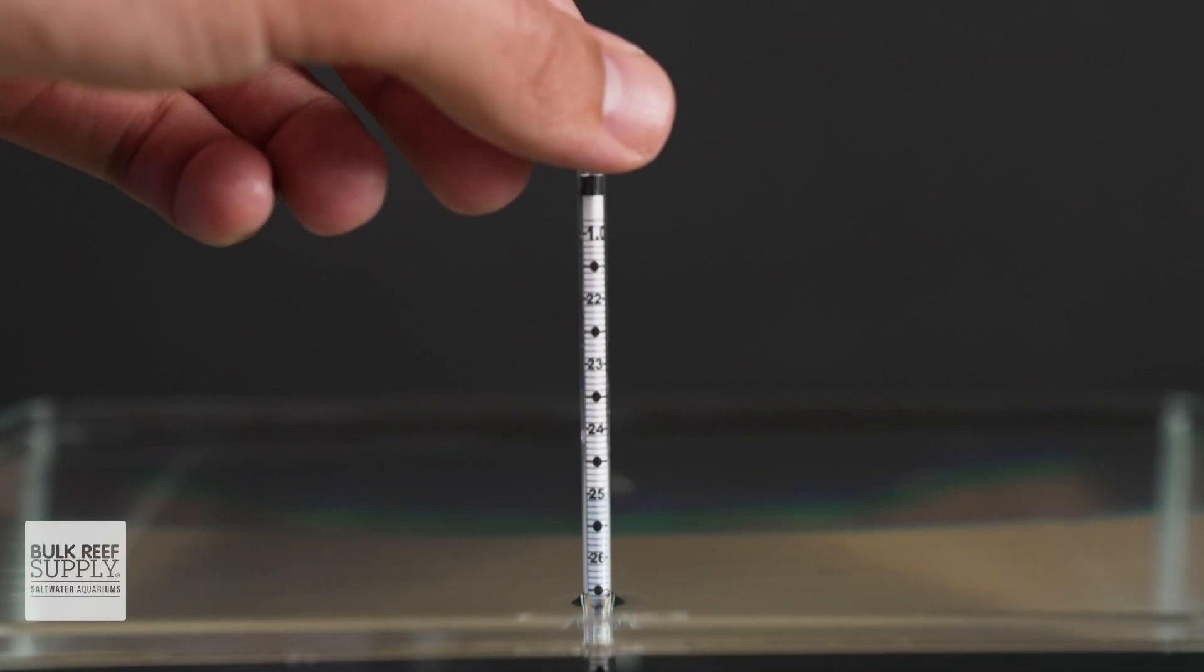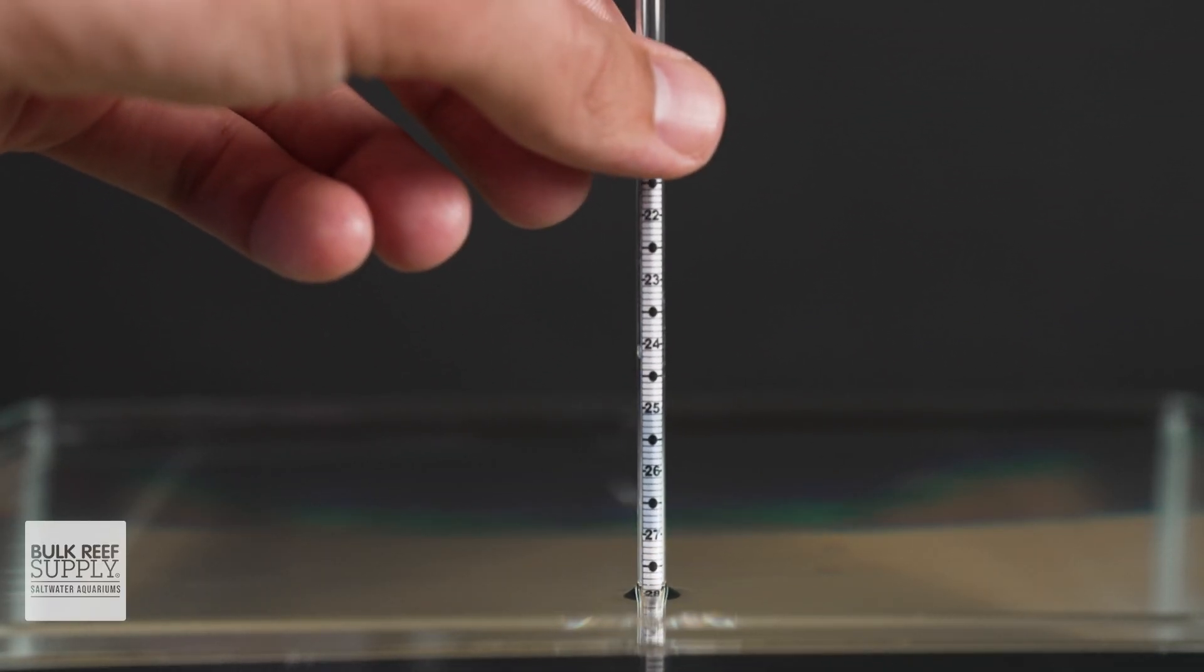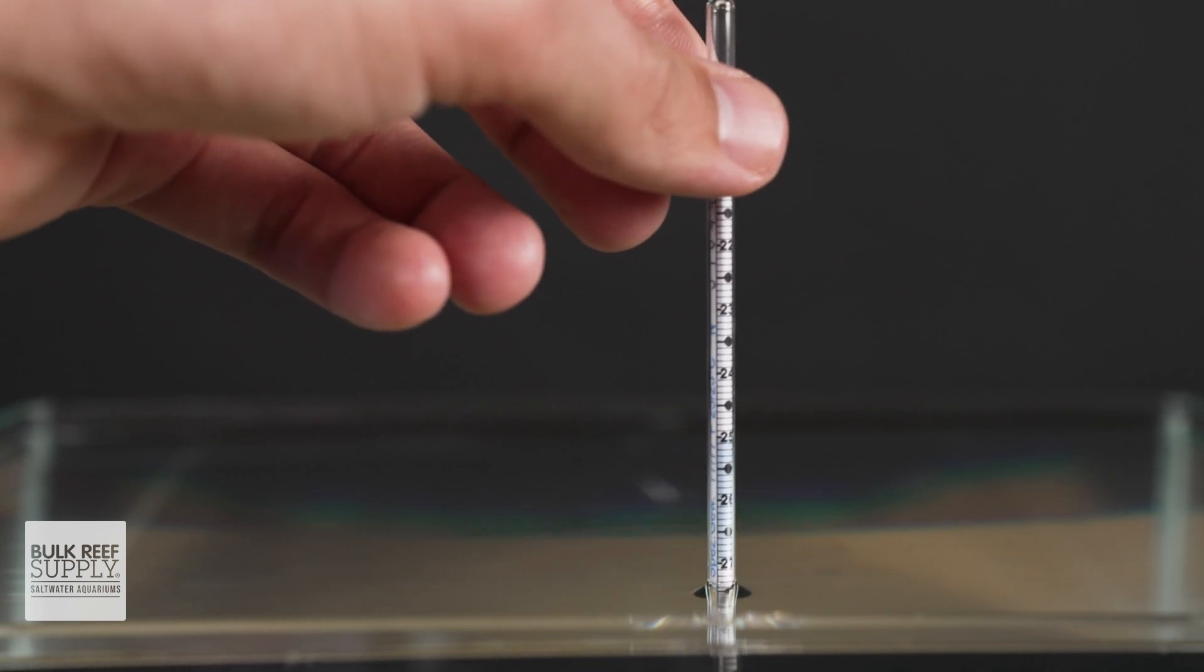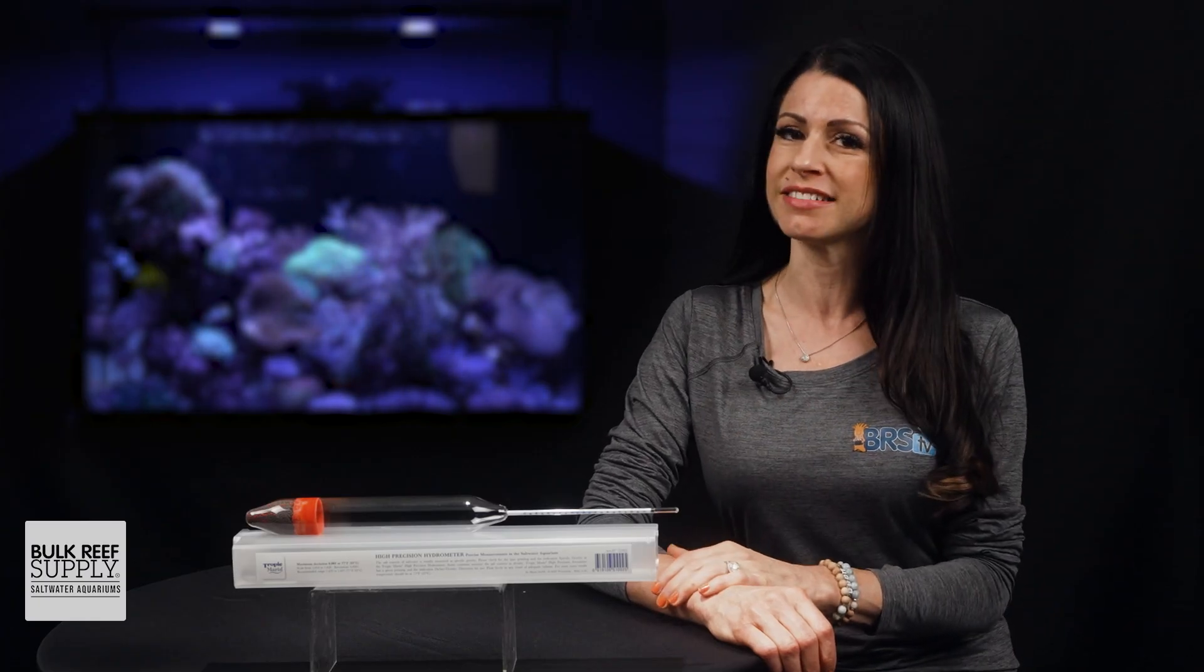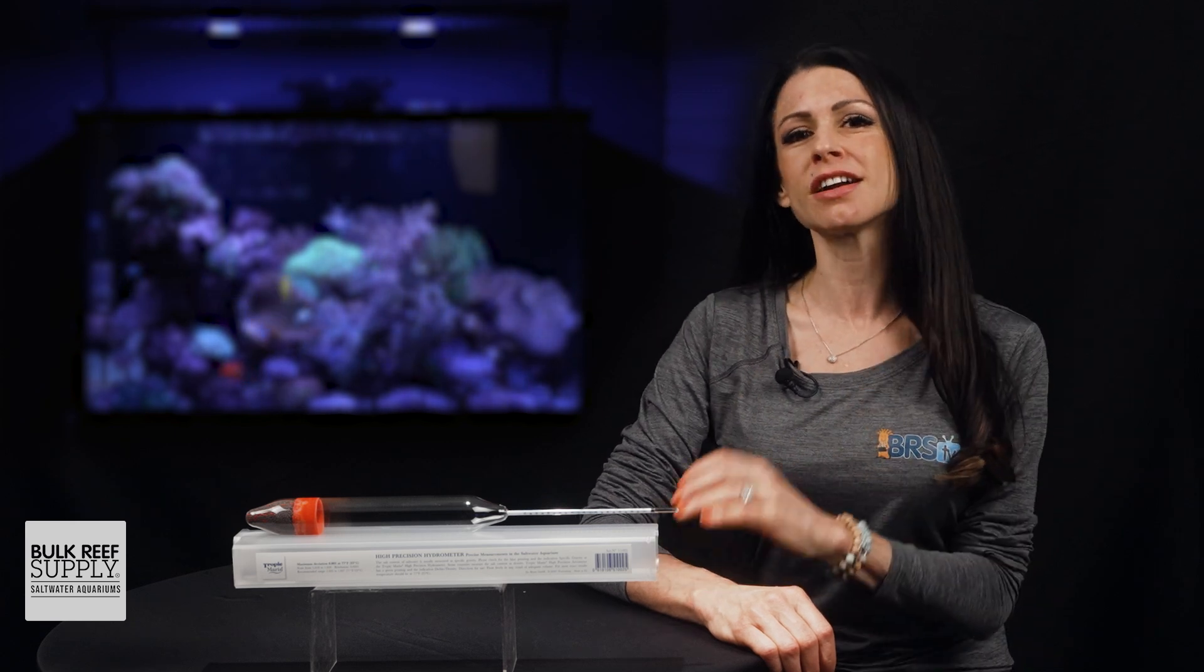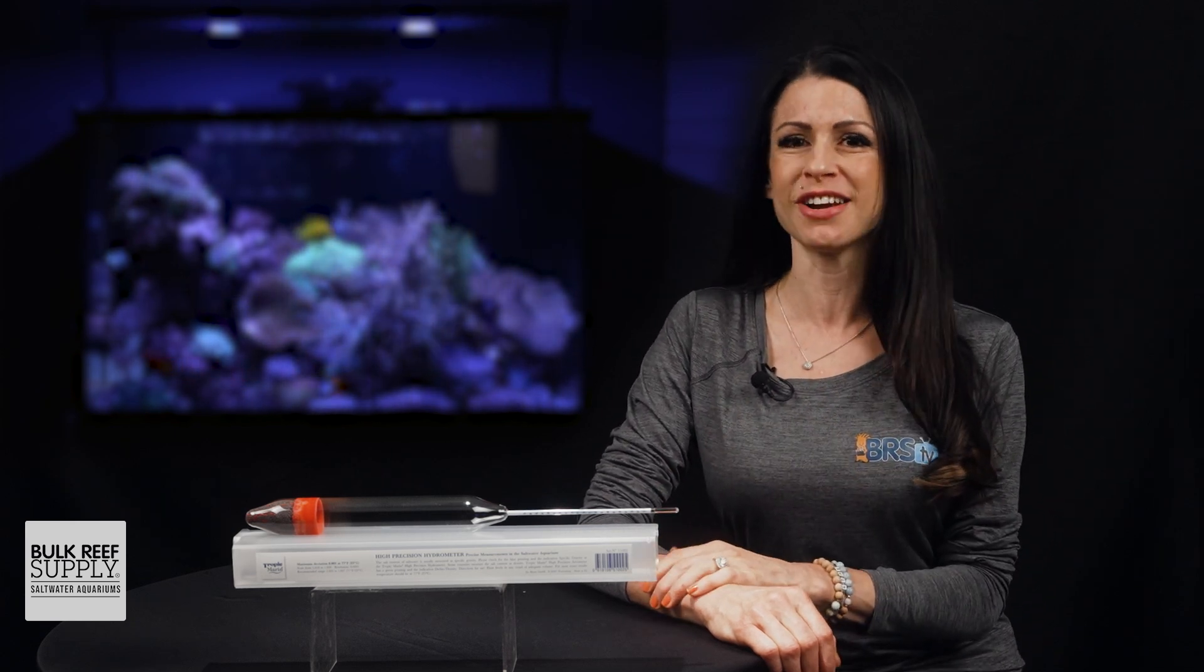How to use it is ridiculously easy. Simply pull a decent-sized water sample, drop it in, give it a quick spin to remove any bubbles, and read. When you're done, dump your water back in your tank, rinse in RO, wipe quickly, and store for next time.